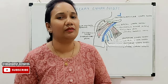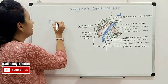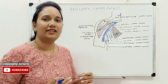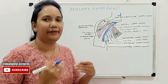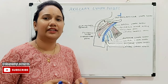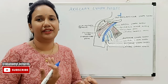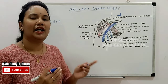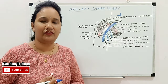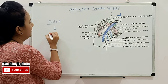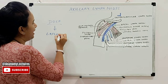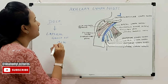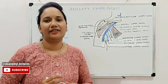Now for the deep group of lymphatics: as mentioned, they travel along the arteries — the radial artery, ulnar artery, and brachial artery. They are present deep to the deep fascia and communicate with the superficial group of lymphatics at different levels, finally draining into the lateral group of axillary lymph nodes.